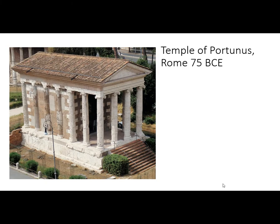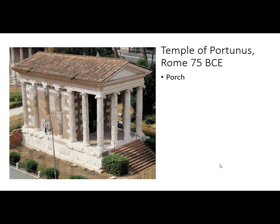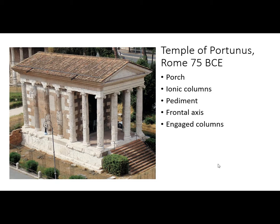We look first at the Temple of Portunus. There is a heavy Etruscan influence — there is a front portico, a porch, and then a solid structure with rooms at the back. It has an axial symmetry; you can go up the stairs. It has a faux peristyle — it does not have columns all around it. It has what we call engaged columns, half columns stuck to a building that are not supporting structures. They are there just to look Greek, and this is an Ionic capital on this building. So we have an influence of both Greek and Etruscan in early Rome's architecture.